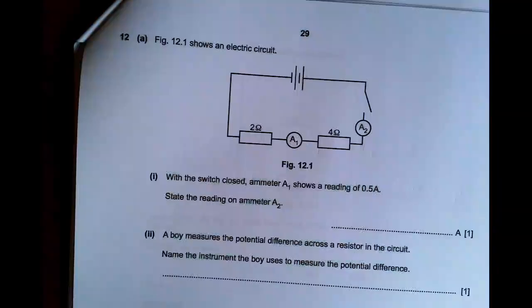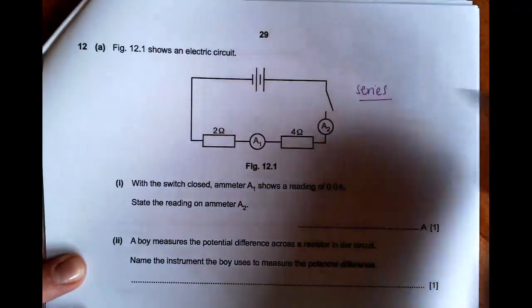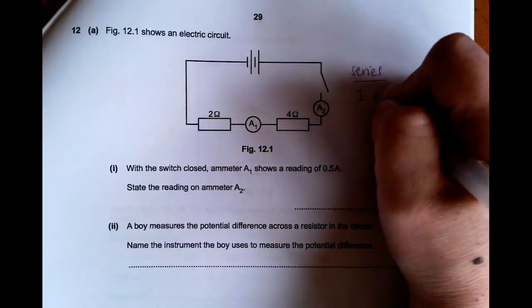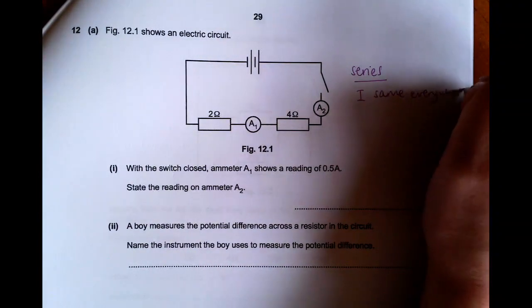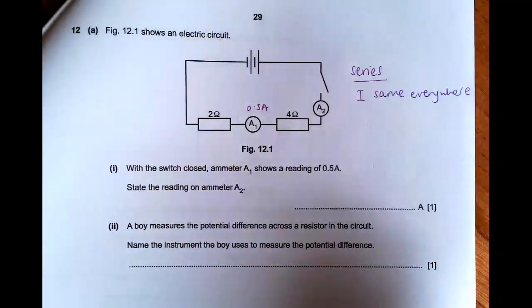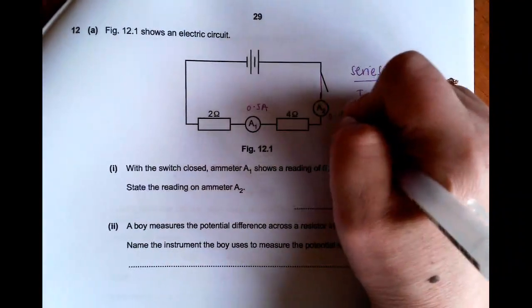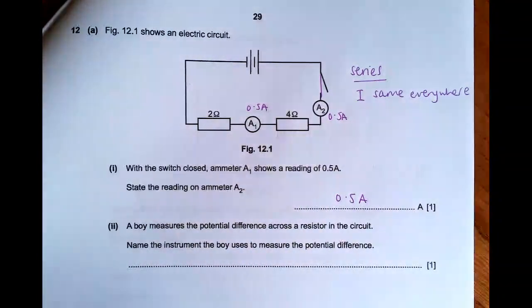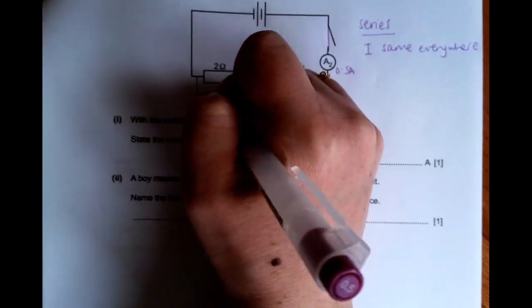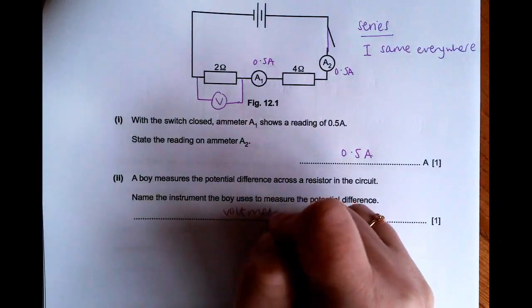Number 12 is an electricity question. So we have a series circuit here. That's important to identify because it helps us know what's happening with current and voltage. So we know that the current is the same everywhere in a series circuit. That's one of our rules. So when the switch is closed, ammeter 1 reads 0.5 amps. But this time the switch has been closed. It's a complete circuit. Well, if it's 0.5 amps here, it also has to be 0.5 amps here as well. It's a series circuit. So you just write the same value. A boy measures the potential difference across the resistor. So that's the voltage. So let's say we put this in here like we know to do. Name the instrument. That is a voltmeter.